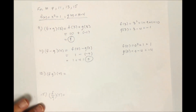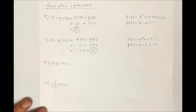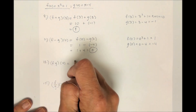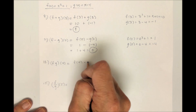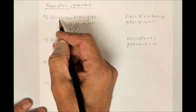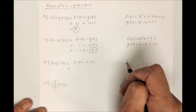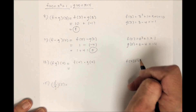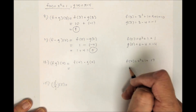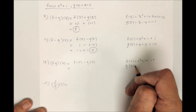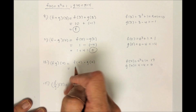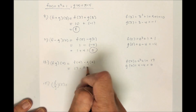The next part would be f times g of 4. F times g of 4 is f of 4 times g of 4. So f of 4 would be what I get when I plug 4 in: 4 squared plus 1, that's 16 plus 1, which is 17. And g of 4 is 4 minus 4, which is 0. So this is 17 times 0, and that's 0.